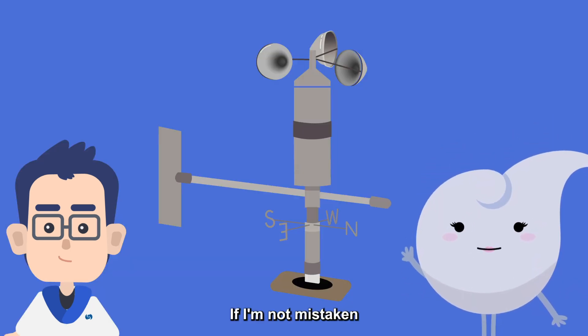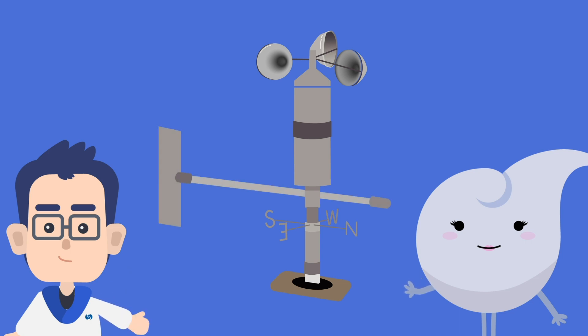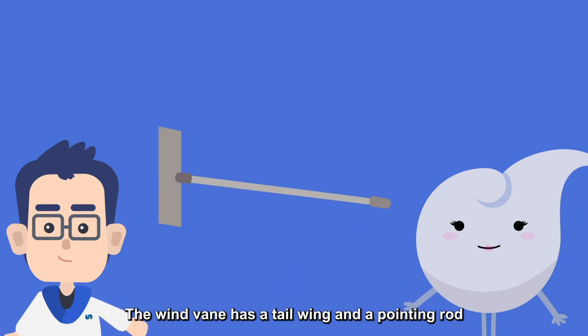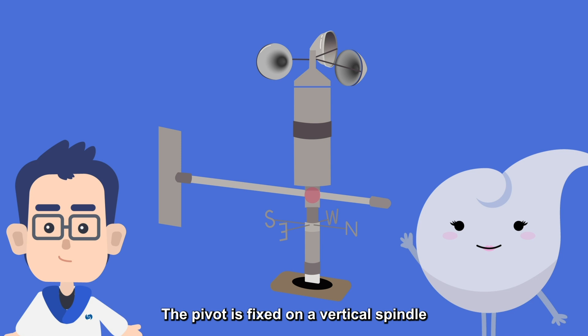If I'm not mistaken, this rod should be indicating the wind direction. Exactly. The wind vane has a tail wing and a pointing rod. The pivot is fixed on a vertical spindle.